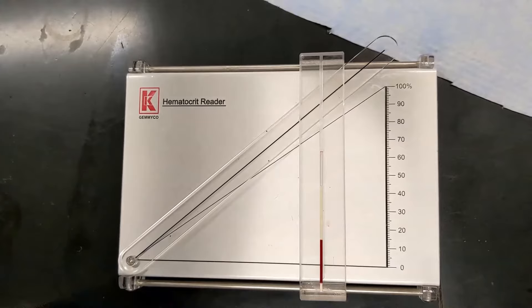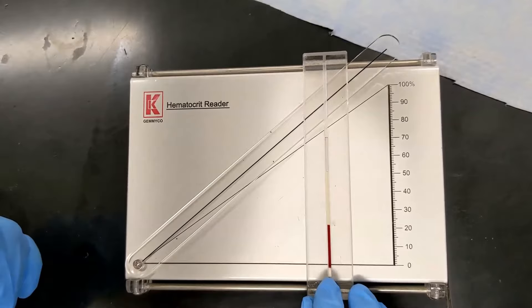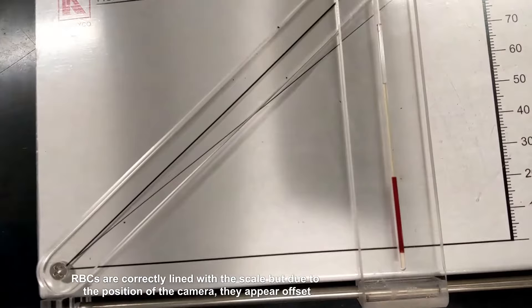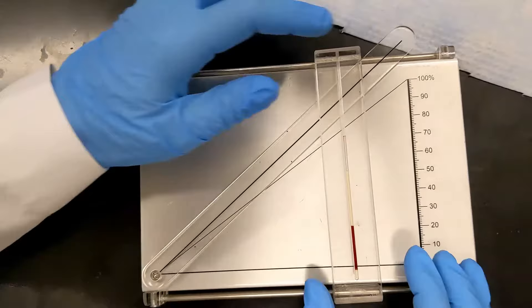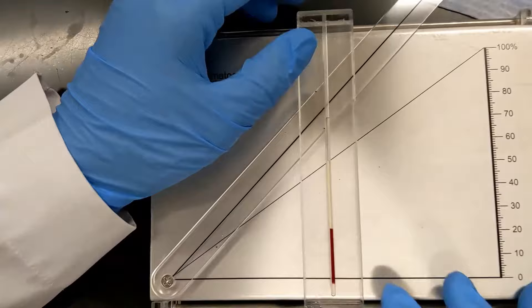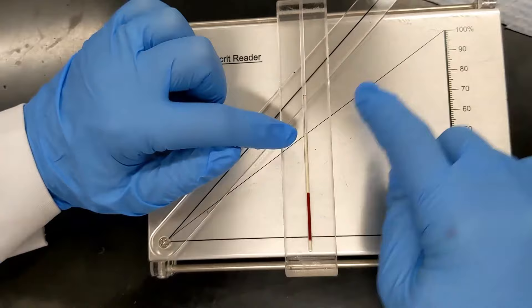You want to place the beginning of red blood cells where it says zero, so you're not accounting for the clay in your reading. And you're going to place this line you see right here at the plasma level. Make sure you match where the plasma is with the line. Zero is where the red blood cells start, and 100% here is the total blood.